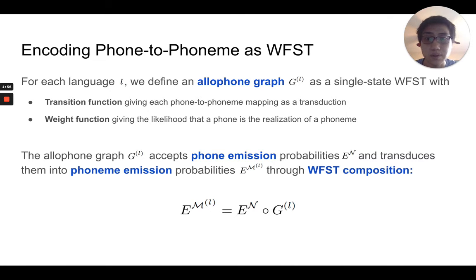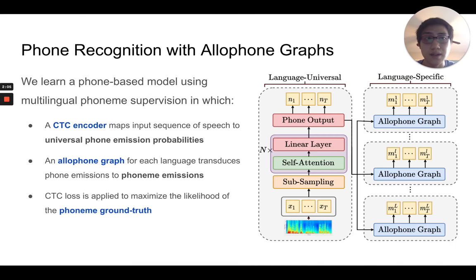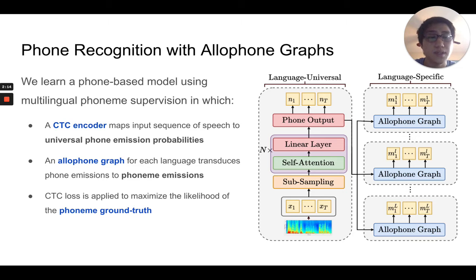We then use these allophone graphs to accept phone emissions, transduce them into phoneme emissions through WFST composition, and we can place these allophone graphs within a multilingual model where we can learn a single shared universal phone output representation and language-specific phoneme representations.